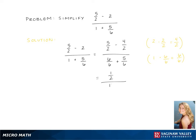Subtracting the two fractions in the numerator gives us 1 half and adding the two fractions in the denominator gives us 11 sixths.